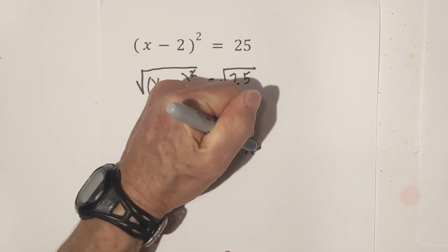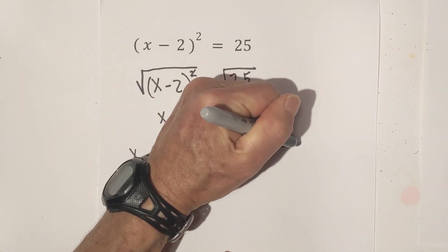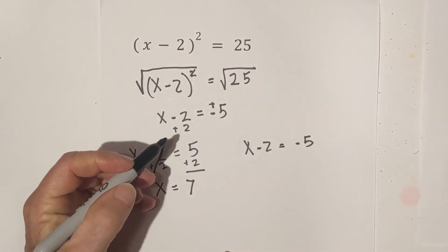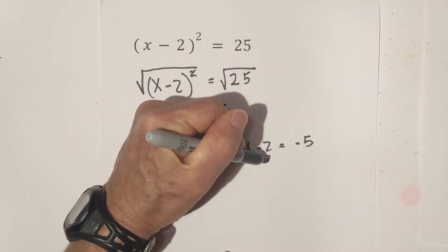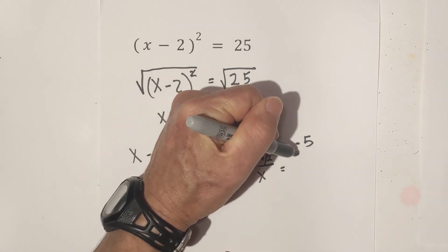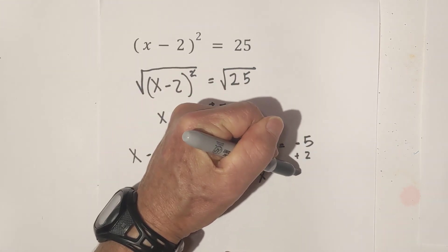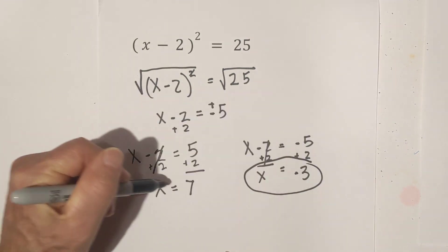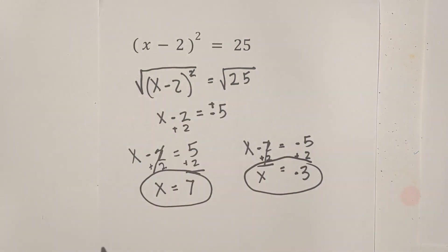And then we have x minus 2 equals a negative 5. And so we add 2. And so we bring down the x equals, we add 2 here. That is a negative 3. So there are your two solutions.